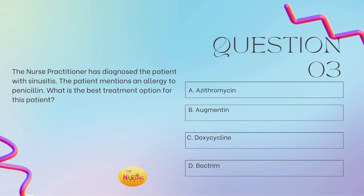Those of you who do my practice questions or have my review books know I call my mnemonics Brittany's Brilliance. The way I tell you to remember respiratory fluoroquinolones: I say 'Get My Lungs.' G for get = gemifloxacin, M for my = moxifloxacin, L for lungs = levofloxacin. Those are the three respiratory fluoroquinolones. You can use any of those or doxycycline when a patient with sinusitis is allergic to penicillin.